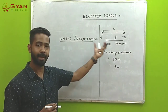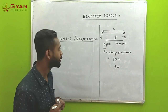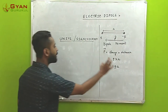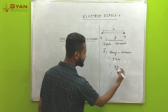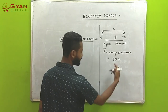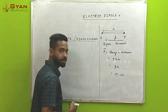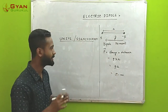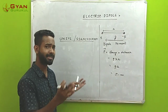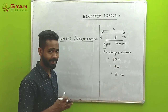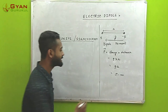We also need to know the unit of dipole moment. From the formula itself, we can determine the unit: Coulomb for charge and meter for distance, so the SI unit of dipole moment is Coulomb-meter. However, when studying this concept in atomic physics and chemistry, we use another unit known as Debye.